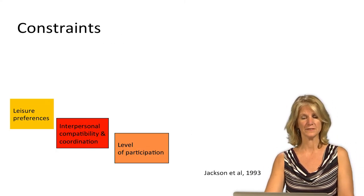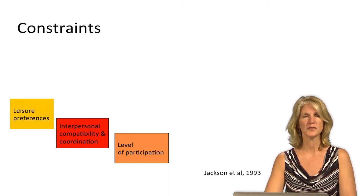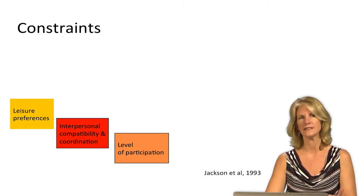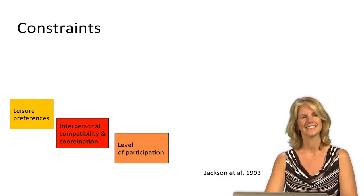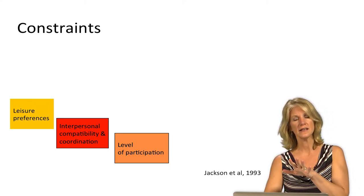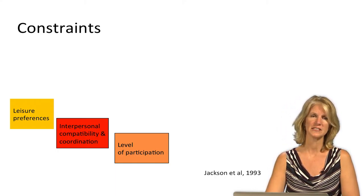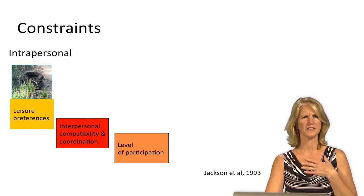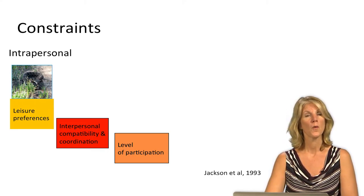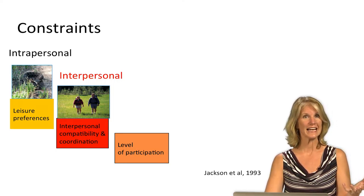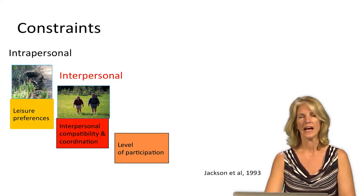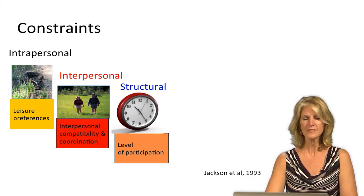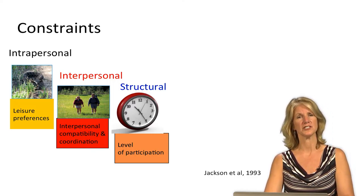These types of influences — including discrimination and generational factors — can be understood as particular types of constraints to leisure behavior. As Jackson posited in 1993 and later in 1997, 2000, and 2005, constraints are assumed to limit the formation of our leisure preferences, as well as inhibit or prohibit our participation and enjoyment of leisure. These constraints can be categorized into three areas: intrapersonal constraints, those dealing with the individual such as fears and self-perceptions; interpersonal constraints, involving coordinating with family and friends; and structural constraints, which broadly include time, money, and the physical environment. These often interact and influence multiple stages of recreation participation.